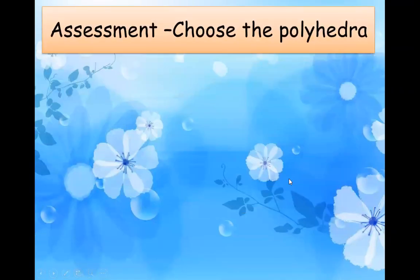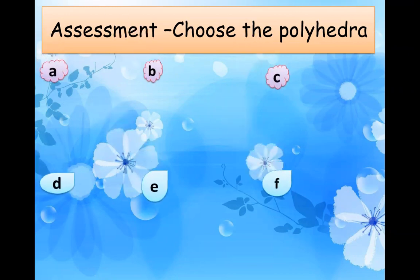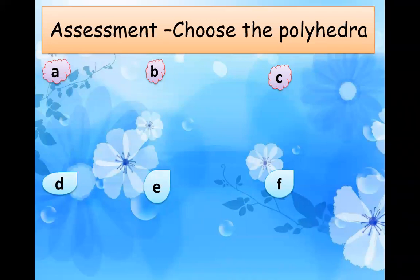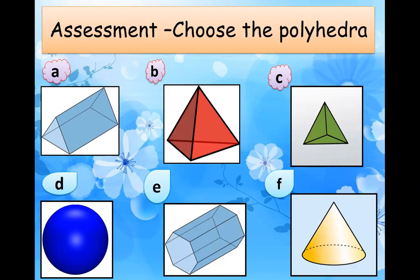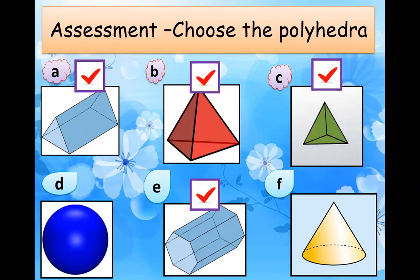Choose the polyhedra. Yesterday we learned about polyhedrons, right? So let me check how much you understood about it. Here you can see 6 different figures and I want you to choose the polyhedra amongst these. Write the correct answers on your whiteboard. Let's check — figures A, B, C and E are polyhedrons.